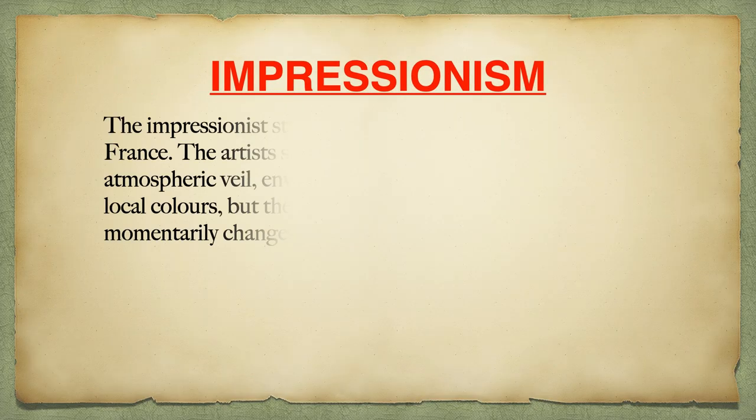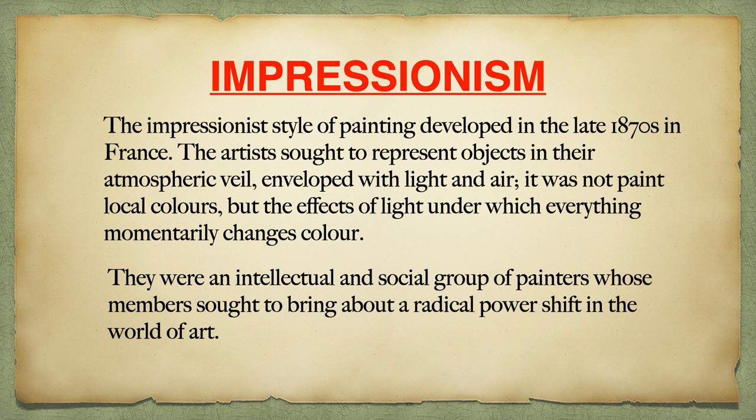The Impressionist style of painting developed in the late 1870s in France. The artists sought to represent objects in their atmospheric veil, enveloped with light and air. It was not about local colors, but the effects of light under which everything momentarily changes color. They were an intellectual and social group of painters whose members sought to bring about a radical power shift in the world of art.